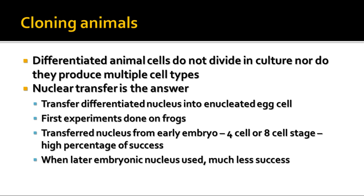The first experiments were done on frogs, and they transferred the nucleus from an early embryo — like a four-cell, eight-cell, or even sixteen-cell stage embryo. They had a pretty high percentage of success when they did that, but they found that as they tried to use more and more differentiated cells — later cells — there was much less success in the process.